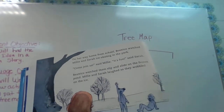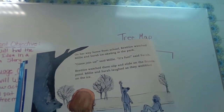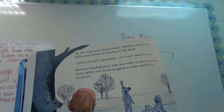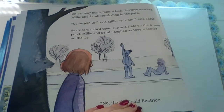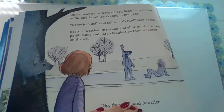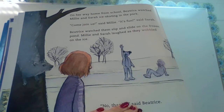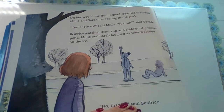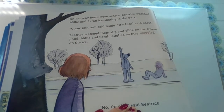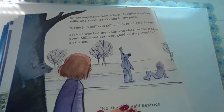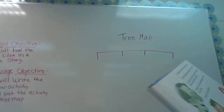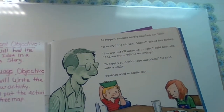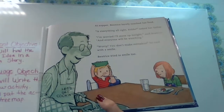On the way home from school, Beatrice watched Millie and Sarah ice skating in the park. Come join us, said Millie. It's fun, said Sarah. Beatrice watched them slip around on the frozen pond. Millie and Sarah laughed as they wobbled over on the ice. No thanks, said Beatrice. At supper, Beatrice barely touched her food. Is everything all right, kiddo, asked her father.